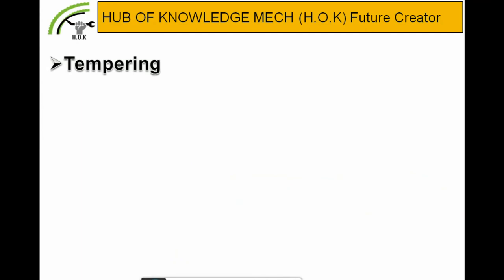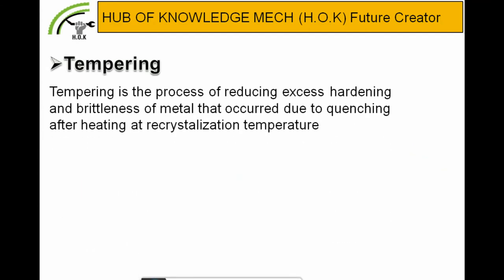Now let's talk about tempering. Tempering is the process of reducing excess hardness and brittleness of metal that occurred due to quenching after heating at recrystallization temperature. When material is heated at 930°C and then quenched in water or oil — the quenching media — it becomes rapidly hard and brittle. Due to brittleness it cannot absorb impact. So to reduce hardness to the desired level and remove brittleness, the tempering process is done.